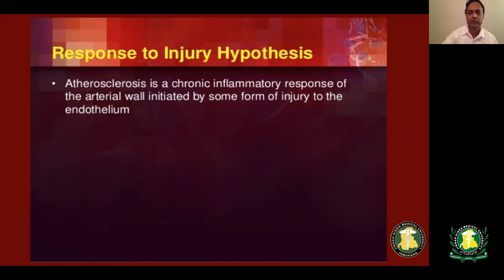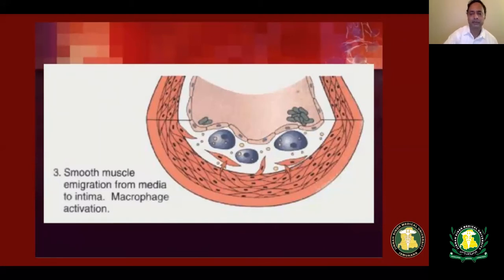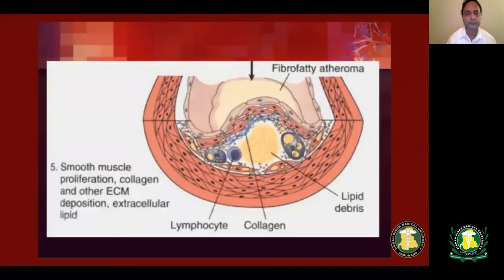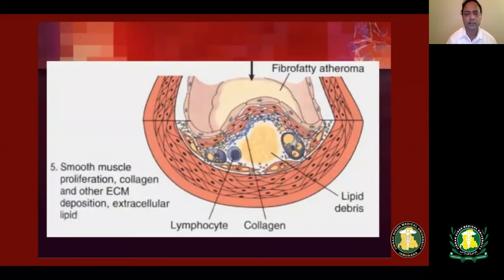The triggers which can cause injury to the vessel include smoking, hypertension, and dyslipidemia. When injury occurs to the intima of the vessel, it causes deposition of smooth muscle cells from the media as well as macrophages in that area. The macrophages and lymphocytes engulf lipids, increase in size, and release chemicals that cause migration and proliferation of smooth muscle cells, which is how the cholesterol plaque increases in thickness.